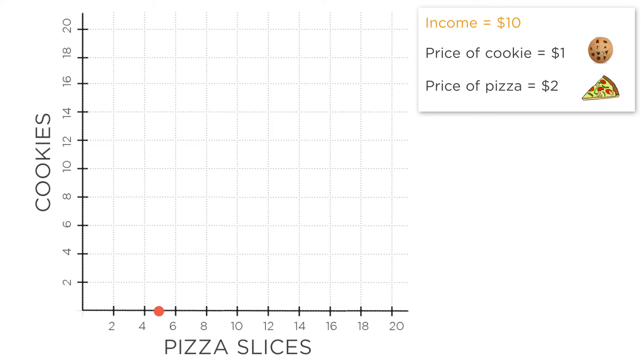What happens if you spend all your money on cookies at $1 per cookie? If you have $10, that means you can buy ten cookies and we'll have nothing left over to buy pizza. That puts you at this point here, ten cookies and zero slices of pizza.